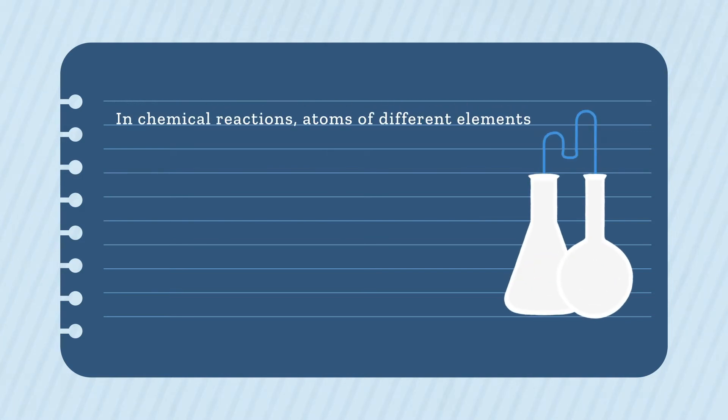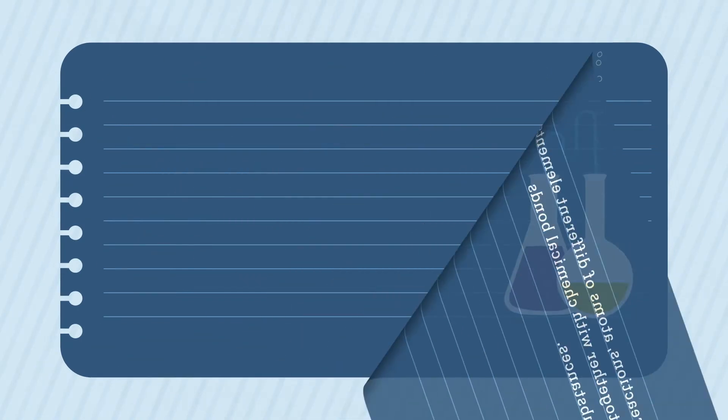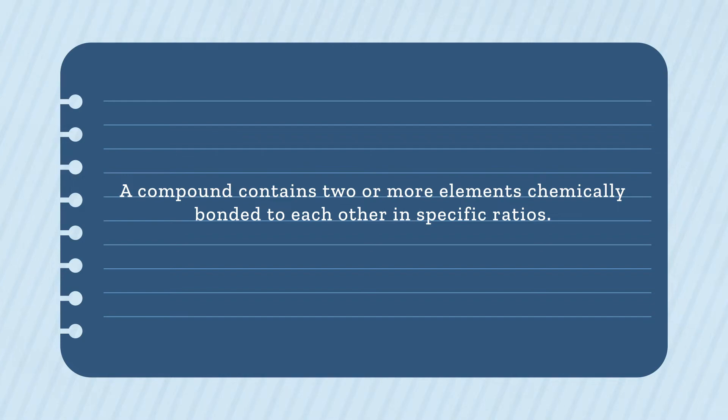In chemical reactions, atoms of different elements can be joined together with chemical bonds to make new substances. A substance that contains two or more elements chemically bonded together in specific ratios is called a compound.